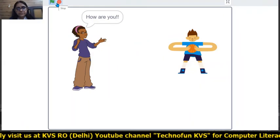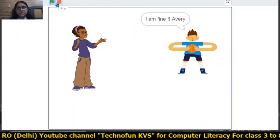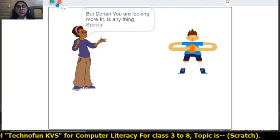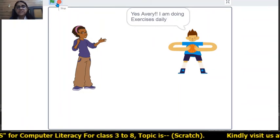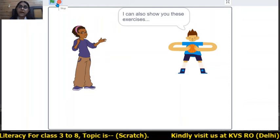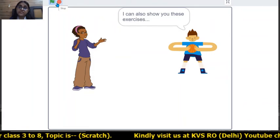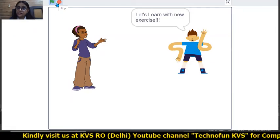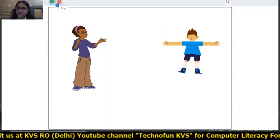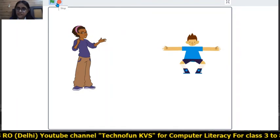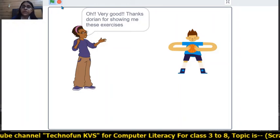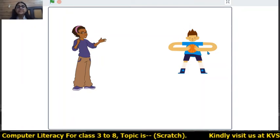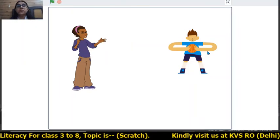The output now shows: Hello Dorian. How are you? I'm fine. I'm very much fit. How are you? Yes Dorian, I'm fine. Dorian, you are looking more fit — is anything special? Yes, I'm doing exercises daily. I can also show you these exercises. Oh wow, please show me these exercises. Exercise 1, next exercise, next exercise. Oh very good! See — Dorian now changes to normal mode. Goodbye Dorian. Goodbye. And in this way we can create a story in Scratch.